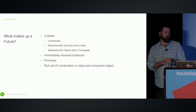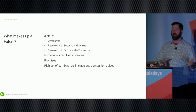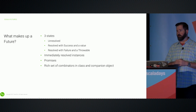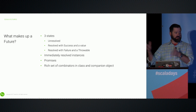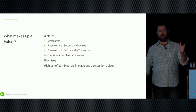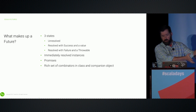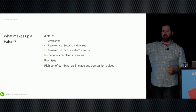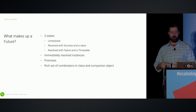What makes a future in the Scala standard library? It's a type that has three states: it can be unresolved, resolved with a success — in which case it has a value of whatever type — or resolved with a failure, in which case we have a throwable. We have helpers to set up immediately resolved instances, which is useful when building tests or when we have a branch where one case we're doing more computation and in another we immediately supply an answer.